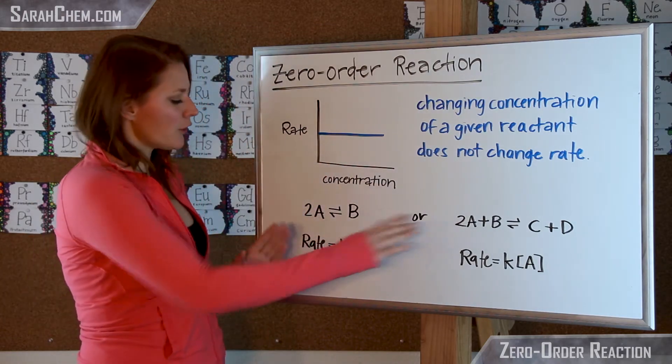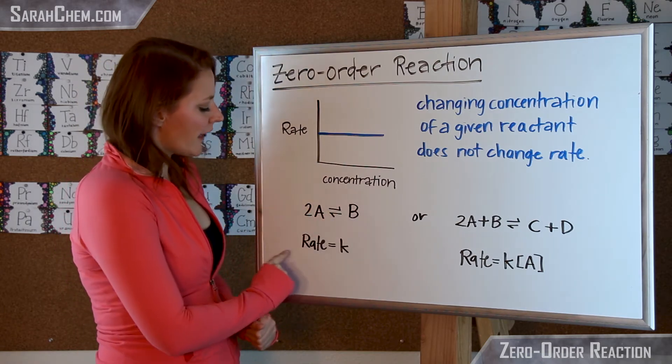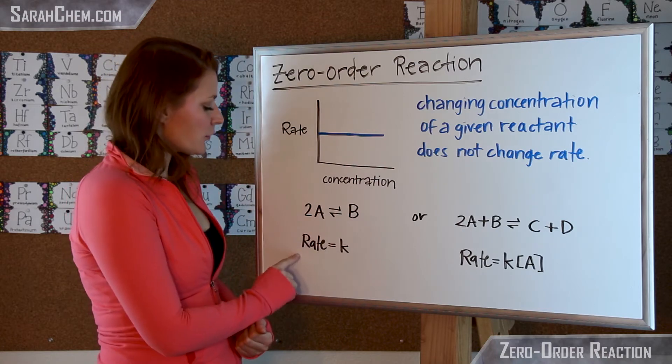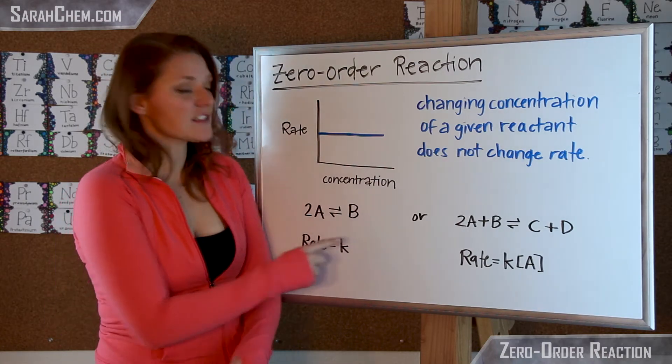Now if we take a look at it in another context, let's see that this is my overall reaction: 2A goes to B. If we find out experimentally that the rate is constant and is equal to the rate constant k, and A does not feature in it...